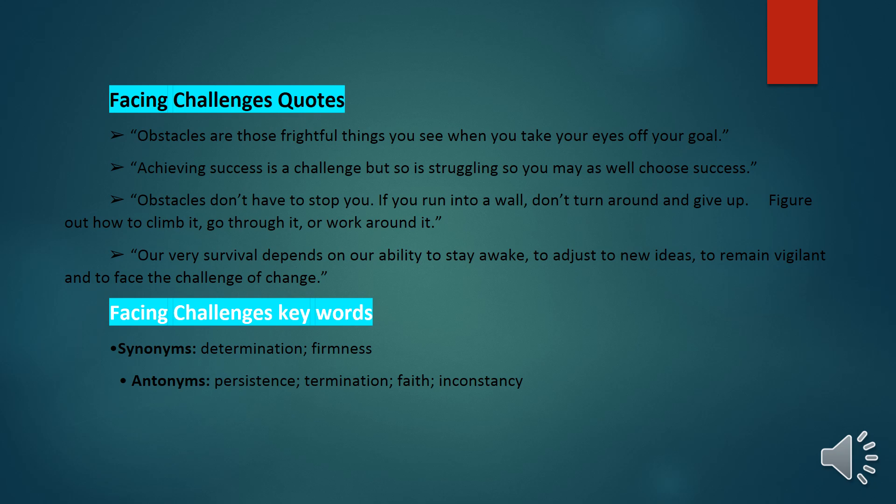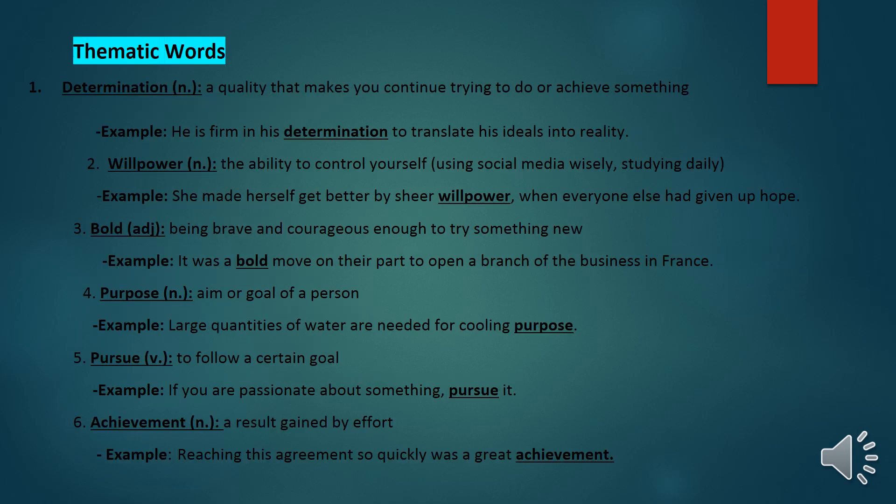Now let's look at the facing challenges keywords. These are thematic words related to the unit. The first word is 'determination' — another word is firmness, and antonyms include inconstancy. Determination is a quality or trait that makes a person continue trying to achieve something. Example sentence: 'He is firm in his determination to translate his ideas into reality.'